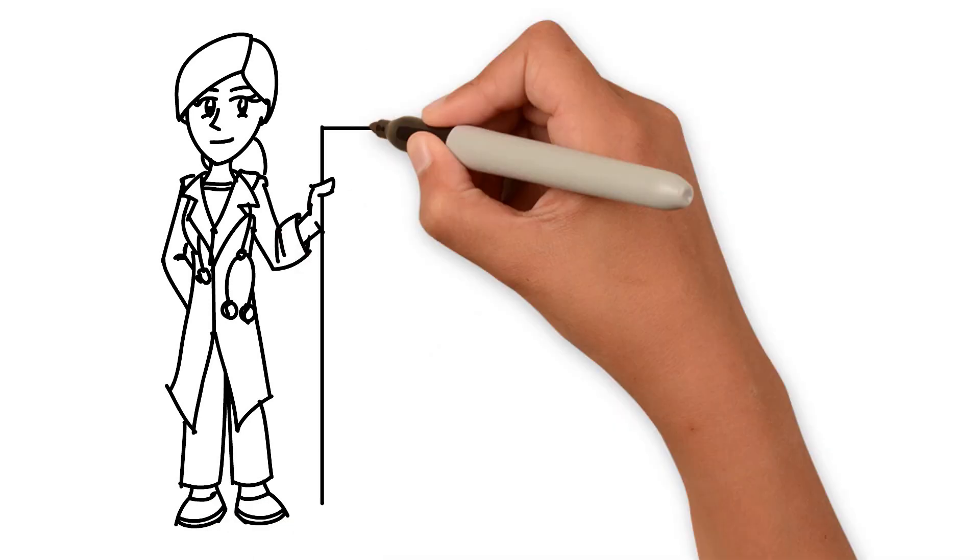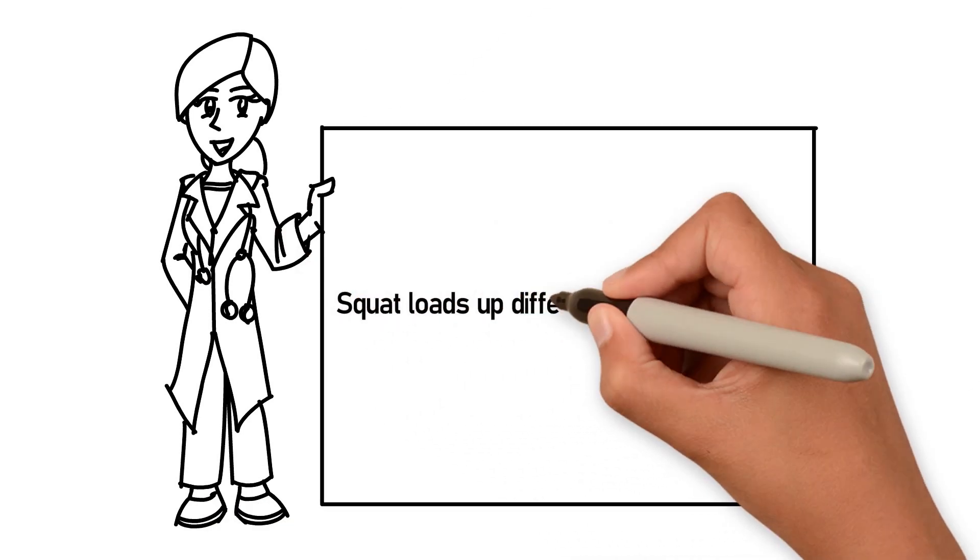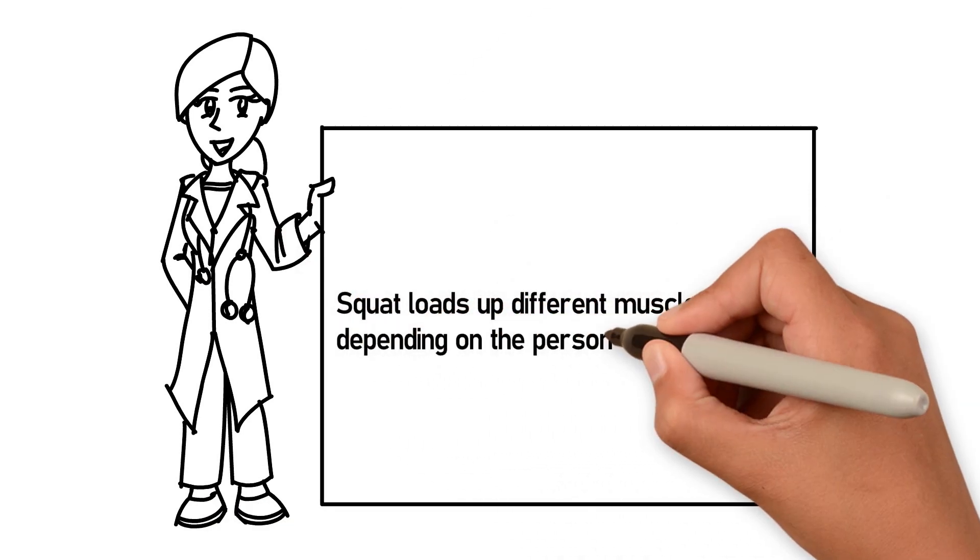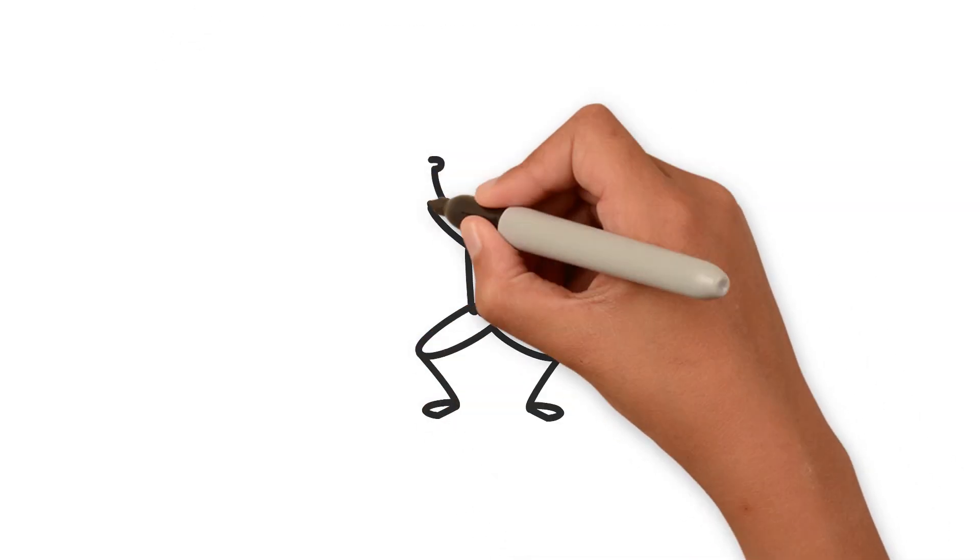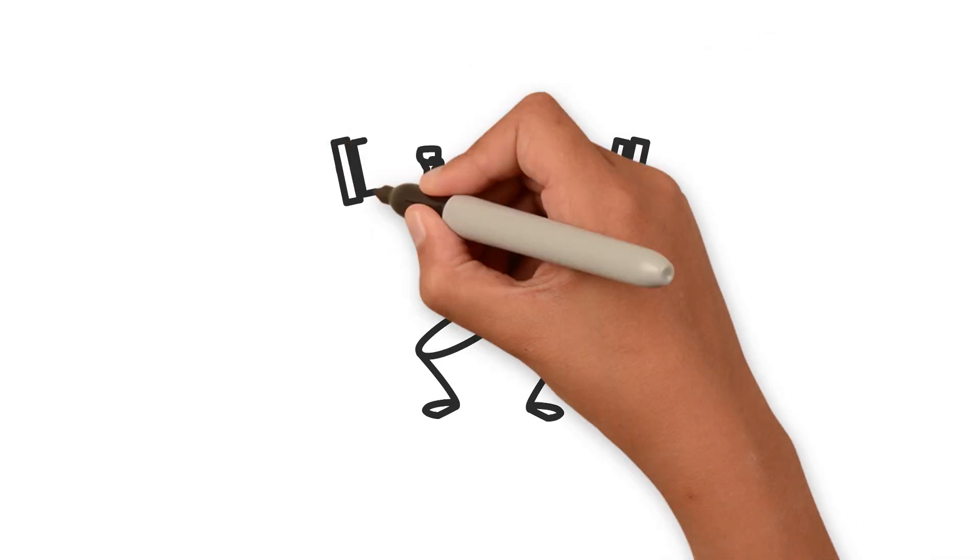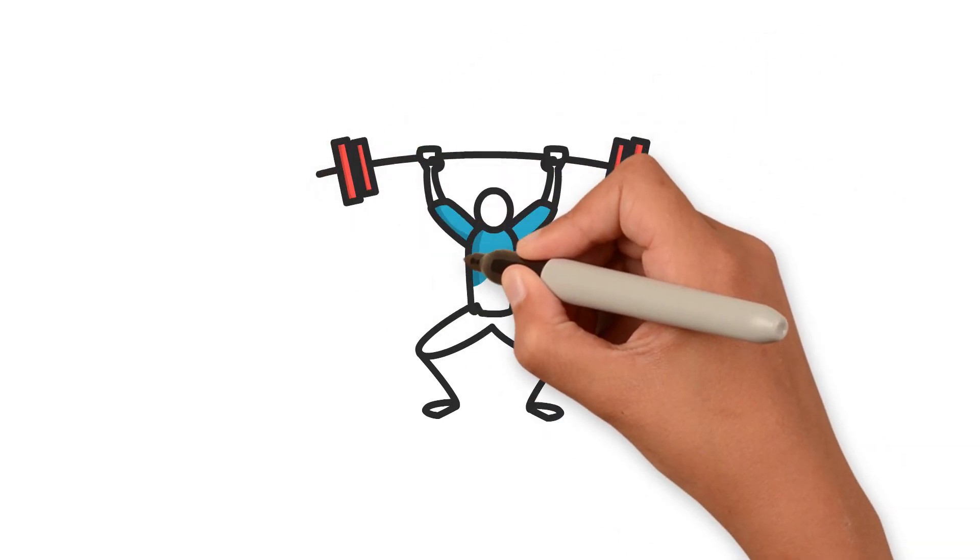The truth is, squats load up different muscle groups depending on the person's body type. Hence, it's normal for different people doing the same squat but feeling it at a completely different muscle group just because their body build is different.